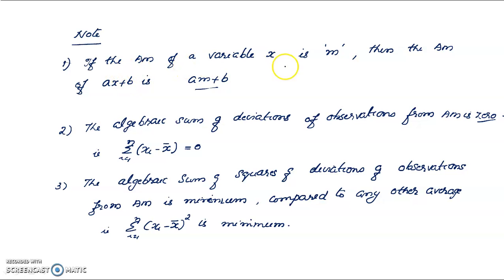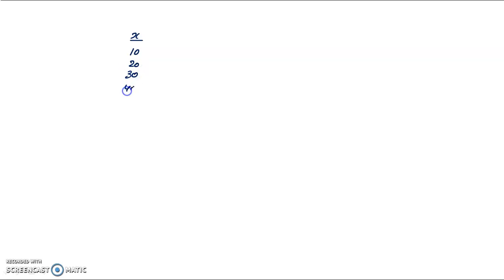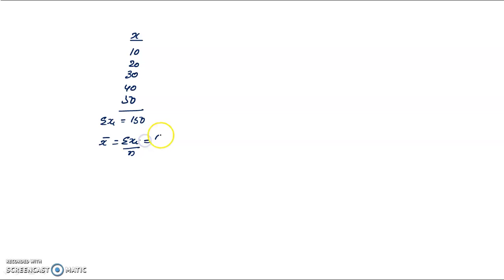Property: If the arithmetic mean of a variable x is M, then the arithmetic mean of ax + b is aM + b. For example, given the set of observations x = {10, 20, 30, 40, 50}, Σxi = 150, so x̄ = Σxi / n = 150 / 5 = 30.